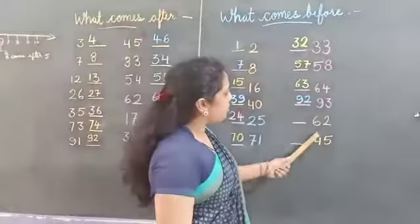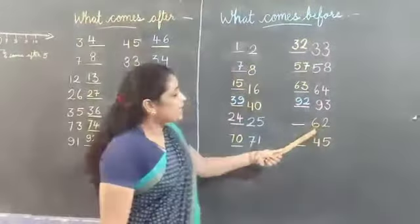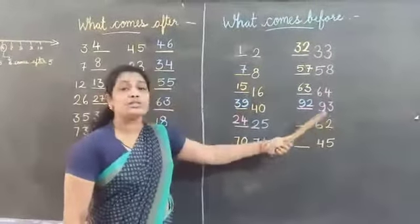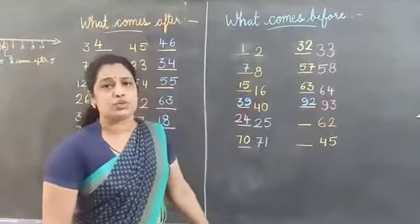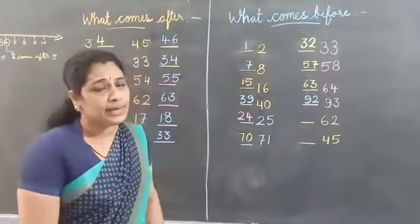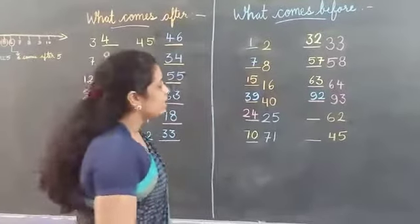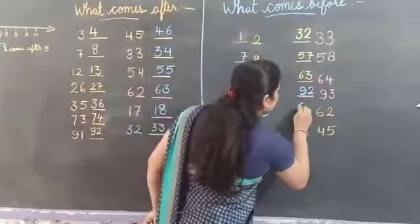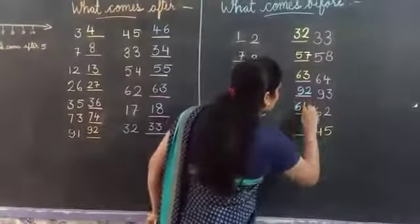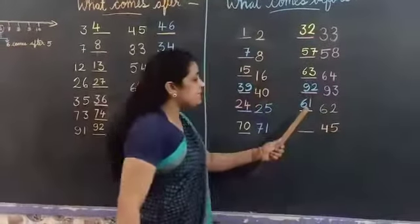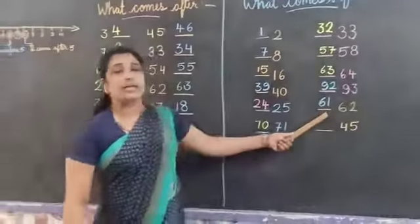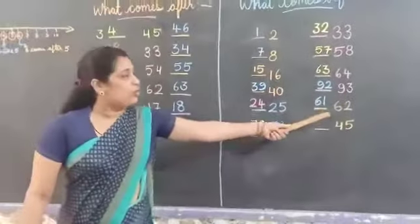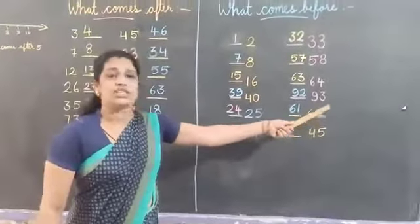And next number is 62. 62 ke pehle kya tha? 6, 1 — that is 61. 61 comes before 62.